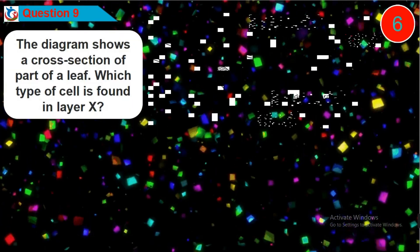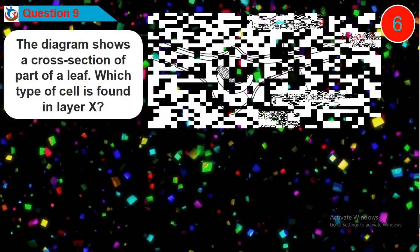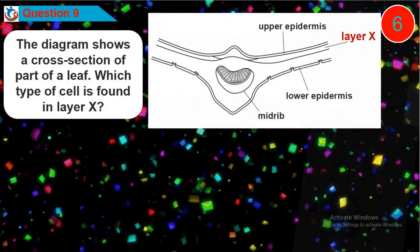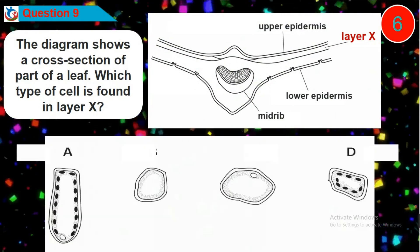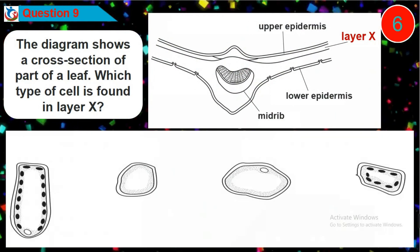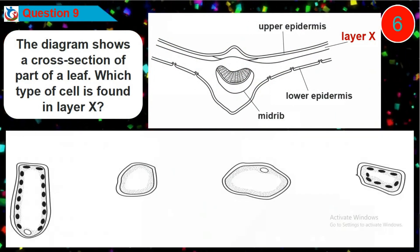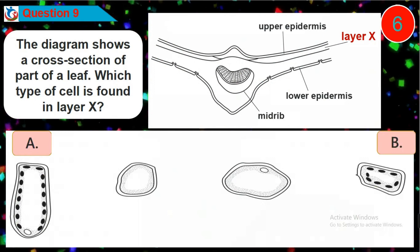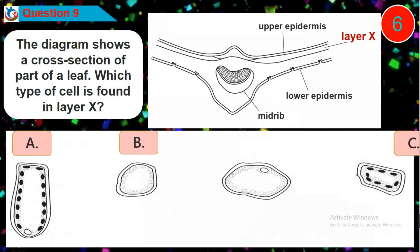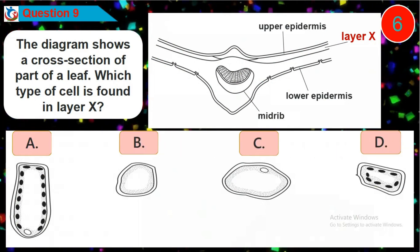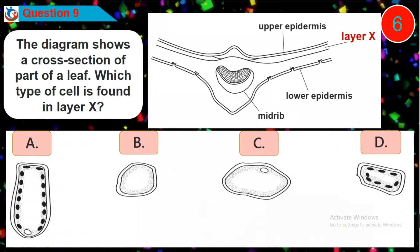Question nine: the diagram shows a cross-section of part of a leaf. Which type of cell is found in layer X? Is it option A, B, C, or D?